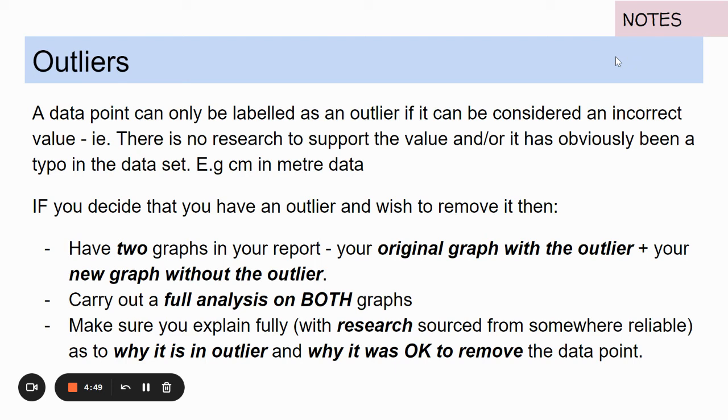Outliers are values that are not believable or where you feel like something has happened. It could be a recording error or a typo in a data set. Sometimes you can fix these if you really know what is happening but most of the time we remove these values because they have an adverse effect on our analysis and our investigation.